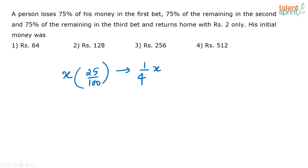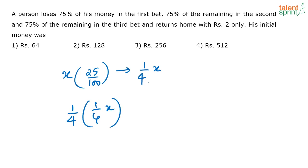Now 75% of the remaining is lost in the second bet. So out of this 1 by 4 X, again 75% — or 3 fourths of this — he has lost. How much is he having left now? He will have only 1 by 4 of this 1 by 4 X. In the first bet he lost 3 fourths, so 1 fourth was remaining. In the second bet he again lost 3 fourths of that, so 1 fourth of what was remaining — that is 1 by 16 X — is what he has now.